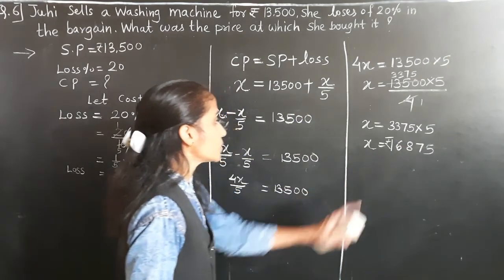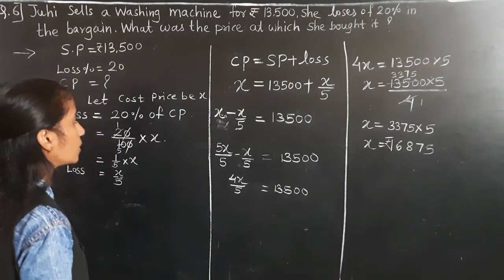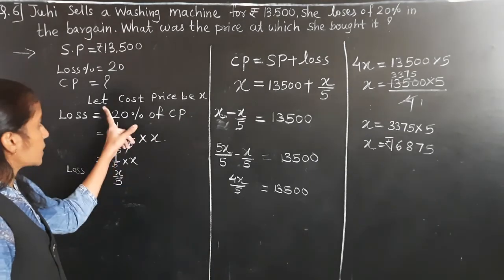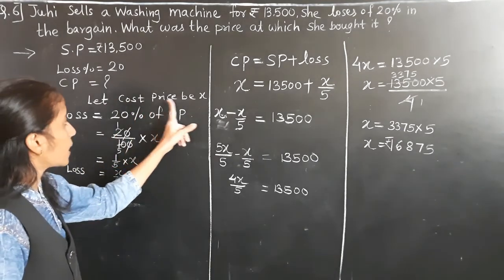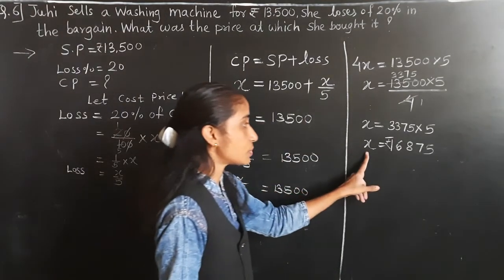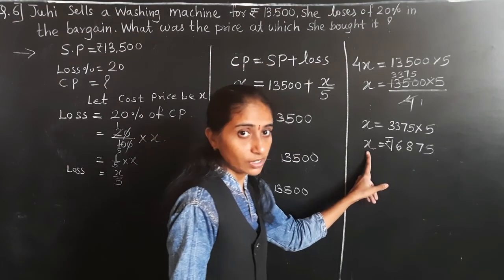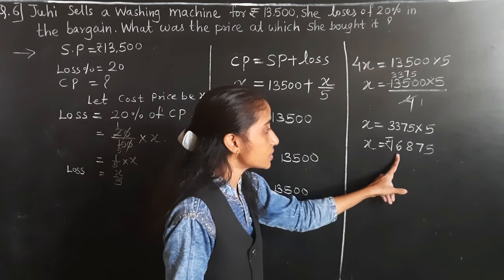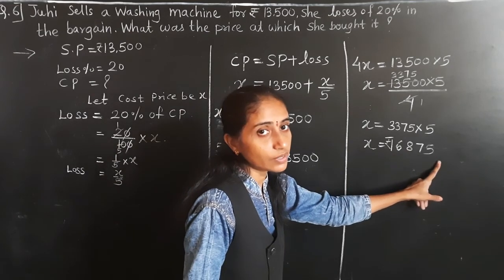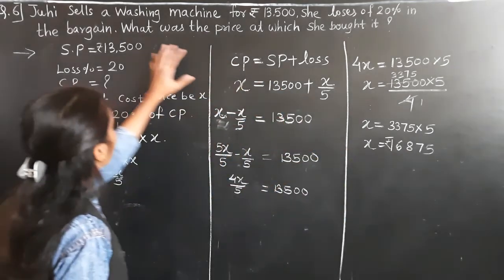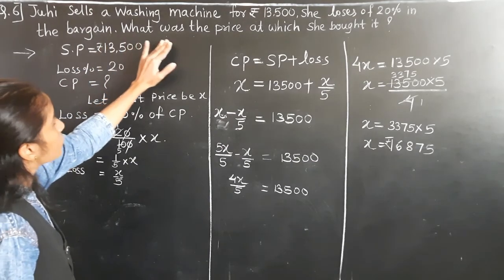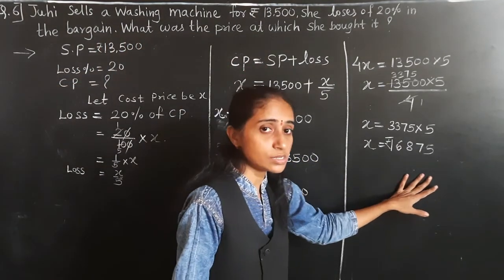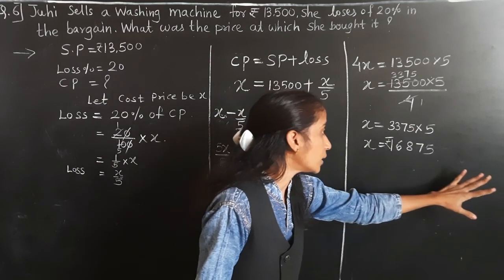X equals 16,875. X means what? We considered cost price equal to X. So cost price is rupees 16,875. What was the price at which she bought it? She bought it for rupees 16,875.